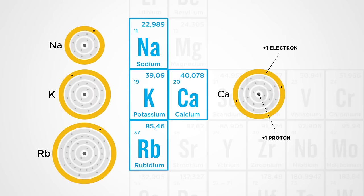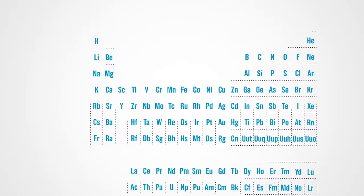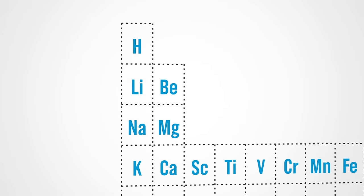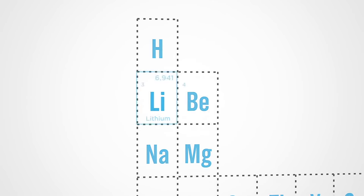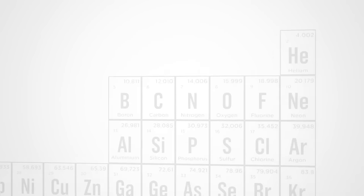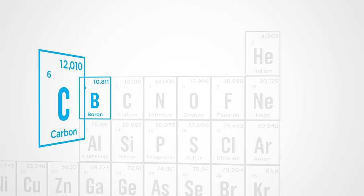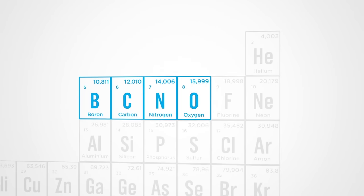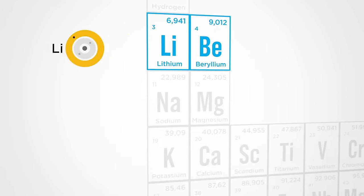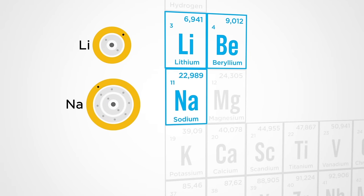We call it periodic because in this table the elements become similar again periodically. Let's see. If we start at 3 lithium, the properties will vary regularly along the line until 10 neon. Here the last layer of electrons gets full and we move on to the next line and back to the first column. The properties of this element, 11 sodium, are again identical to the element that is directly above it, and so on.